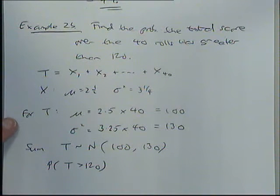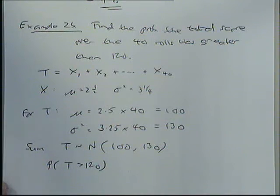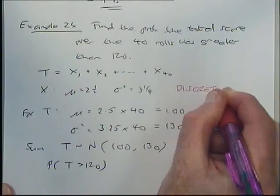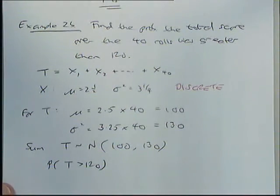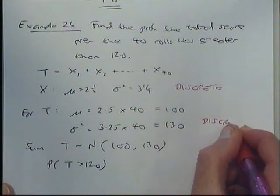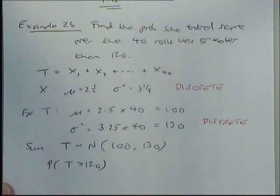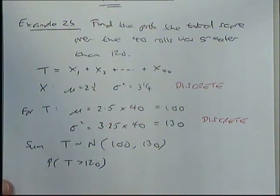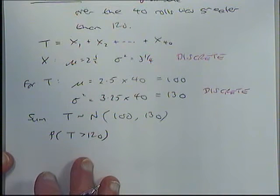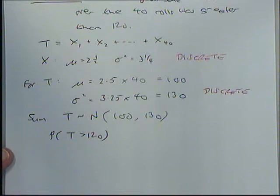Okay? T is adding up lots of discrete things. X was discrete. X bar wasn't. But T, which is adding up lots of discrete things, T will also be discrete. So in a minute, if I'm doing a normal calculation here, yes, I will have to use a continuity correction. Well spotted. I'll deal with that bit in a minute.